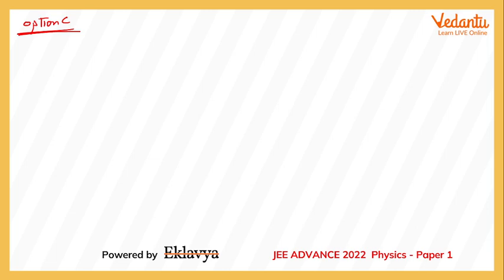If you had applied the normal Bernoulli equation, you would have gotten 590 meters, and since you'd be using the wrong concept, you could argue that value is incorrect. Let me now solve the question using the proper version of Bernoulli's equation, which requires revisiting its derivation.